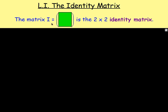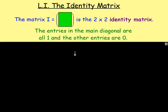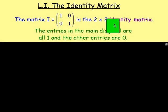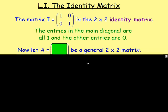Well, this matrix here, matrix I, is the 2x2 identity matrix. That is when all the entries in the leading diagonal are 1, going from top left to bottom right, and all the other entries are 0. That there is known as the 2x2 identity matrix.